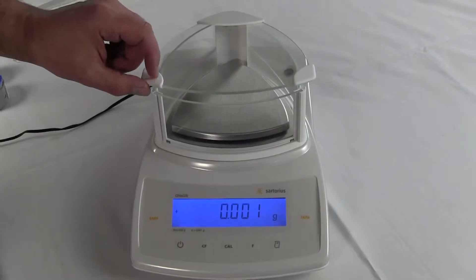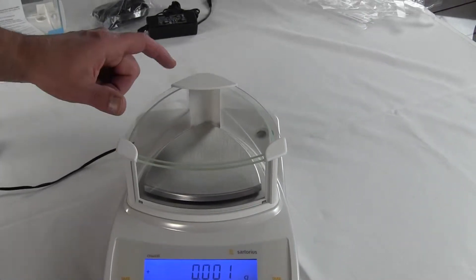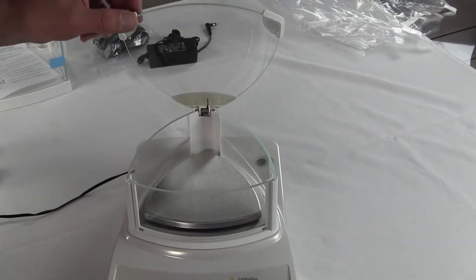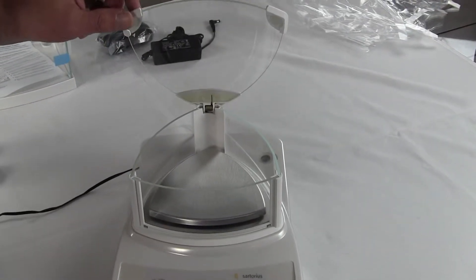You'll notice the draft shield. We're using an all-glass draft shield. A lot of low-end milligram balances on the market today are using plastic. This is a glass draft shield.